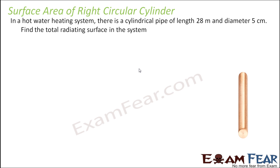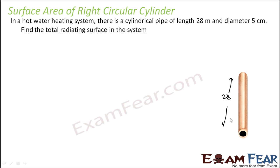In a hot water heating system, there is a cylindrical pipe. There is an issue with this image so we will just ignore it — there is no base; it is a hollow pipe. This pipe is of length 28 meters and diameter 5 centimeters. So we see meters and centimeters — there is a unit confusion. We need to find the total radiating surface area. Let's convert everything to meters only.